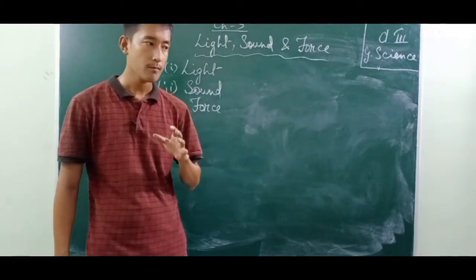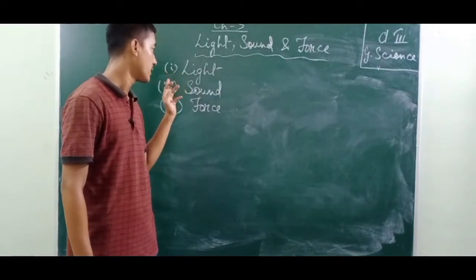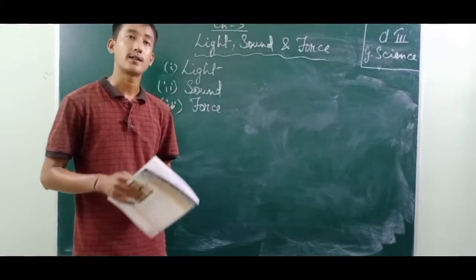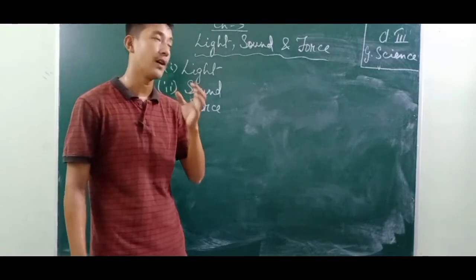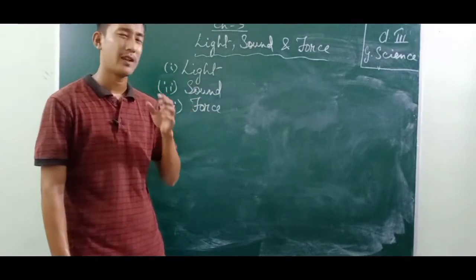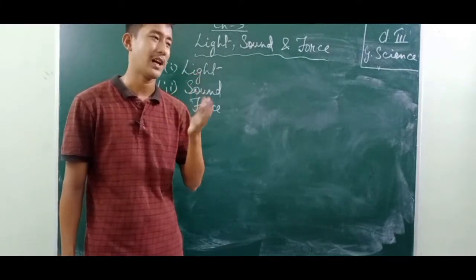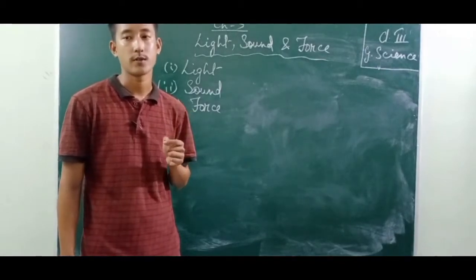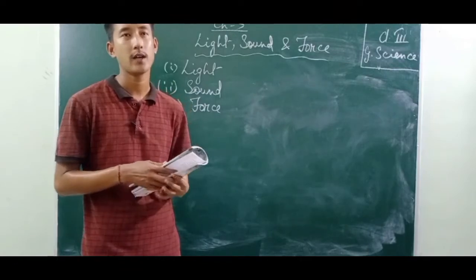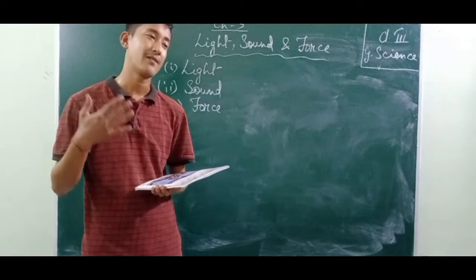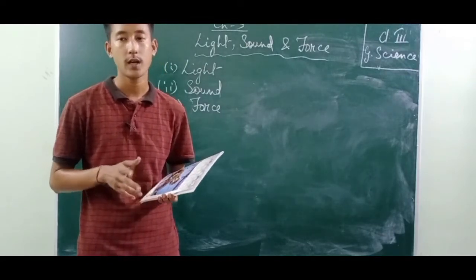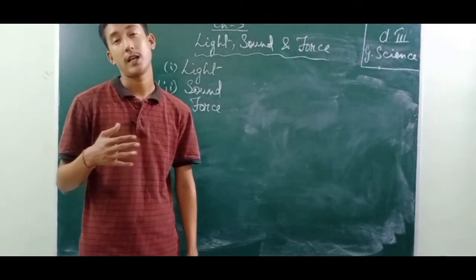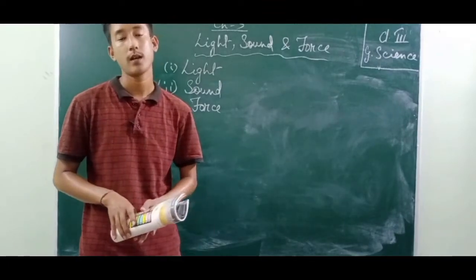So to summarize: number one, light - the Sun and the bulb are objects that give us light. Number two, sound - there are many kinds of sound; some are very pleasing and some are very annoying. Number three, force - a push or a pull is called a force. You apply less force for small things, but more force for heavier or bigger things. In the next chapter we are going to study another new and exciting chapter. Okay, bye! Stay home, stay safe - do it for yourself, do it for your family.